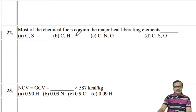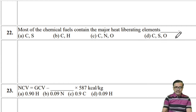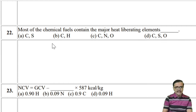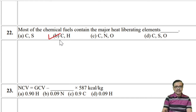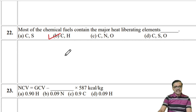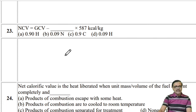Most chemical fuels contain carbon and hydrogen as the major heat-liberating elements — they are the main constituents of hydrocarbons and alkanes.